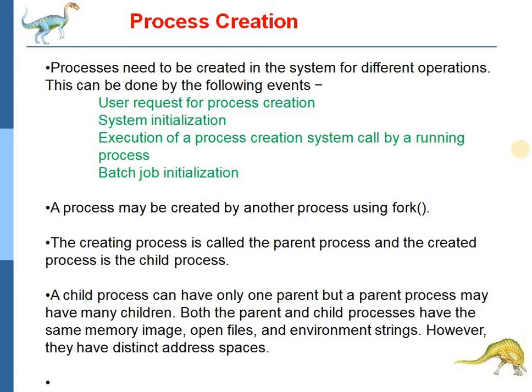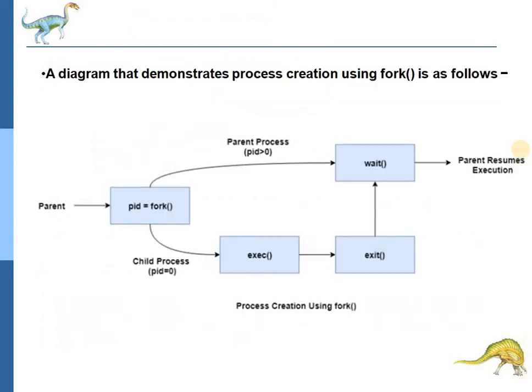Processes are identified by a unique number called as a PID. The original or creating process is called as a parent process, and new processes are called as child processes. Each of the child processes may create other processes, which form a tree of processes. A process may be created by another process using the fork system call. A child process can have only one parent, but a parent process may have many children. Both the parent and children processes have the same memory image, open files, and environment strings. However, they have distinct address space.